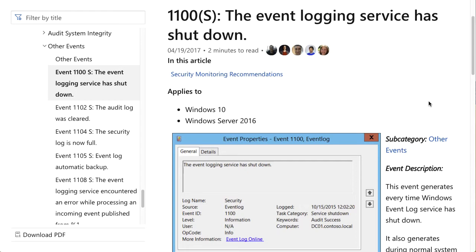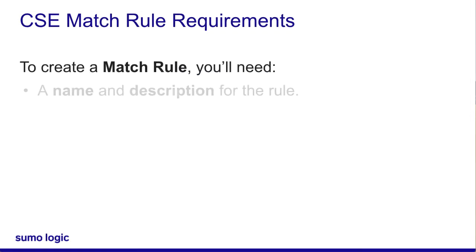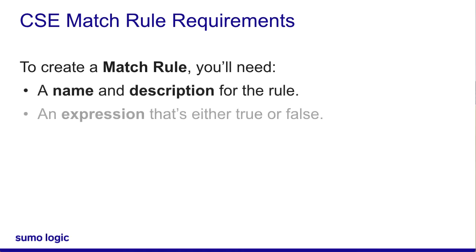Great idea. That error code is either there or it isn't. So how do I start? The first thing you do is name the rule — that can be anything you'd like. But the most important bit is the rule expression. That's a simple boolean statement. It's either true or false.